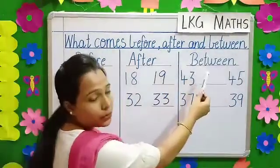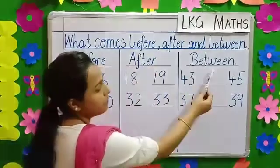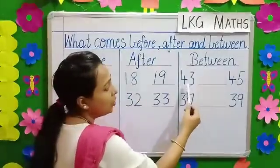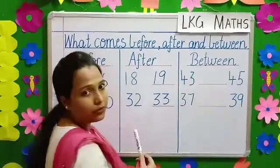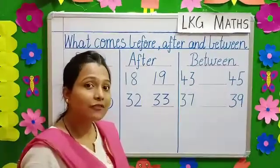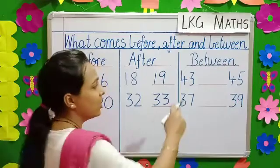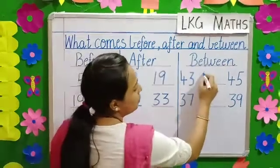Next, we come to what comes between. Now, you see two numbers are given here. 43 and 45. So, what comes after 43 children? After 43, 44.